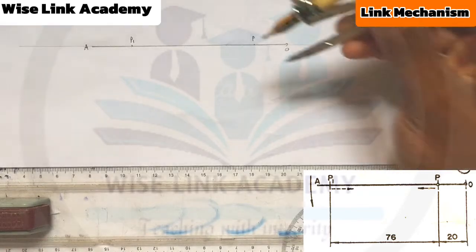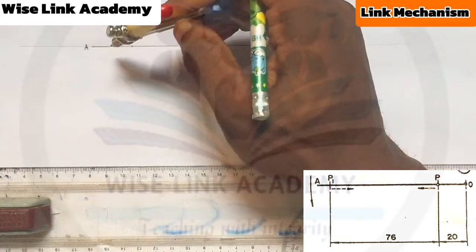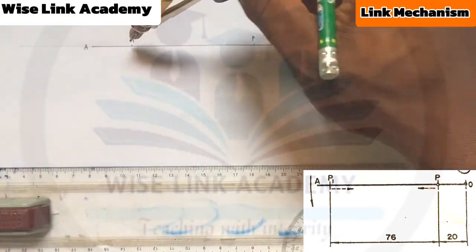From here, from O, I'll draw extending my compass to P1 and draw a faint arc this way.